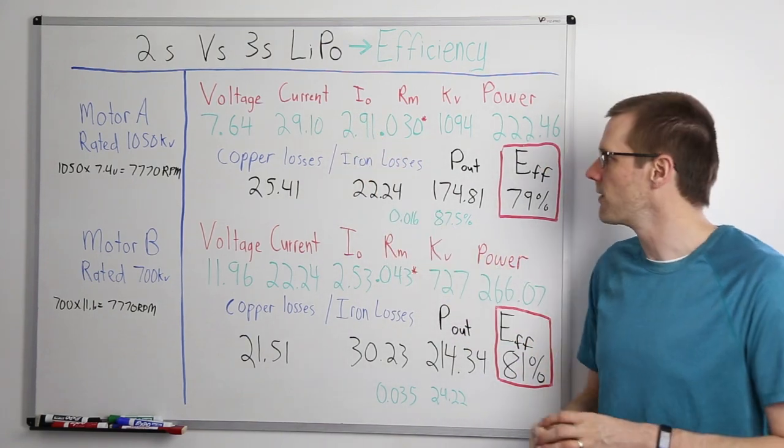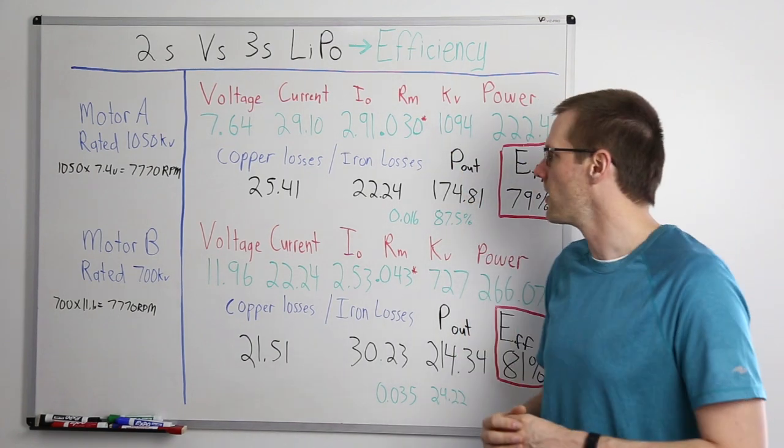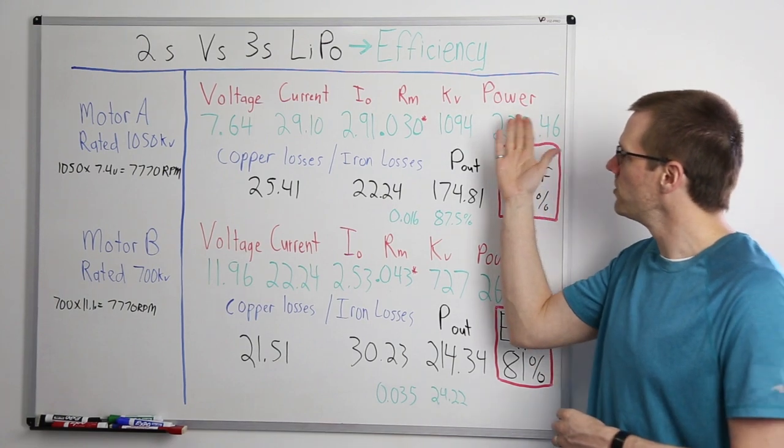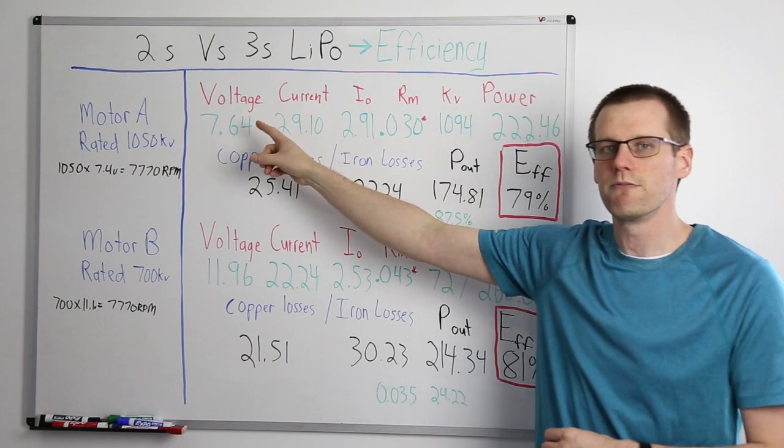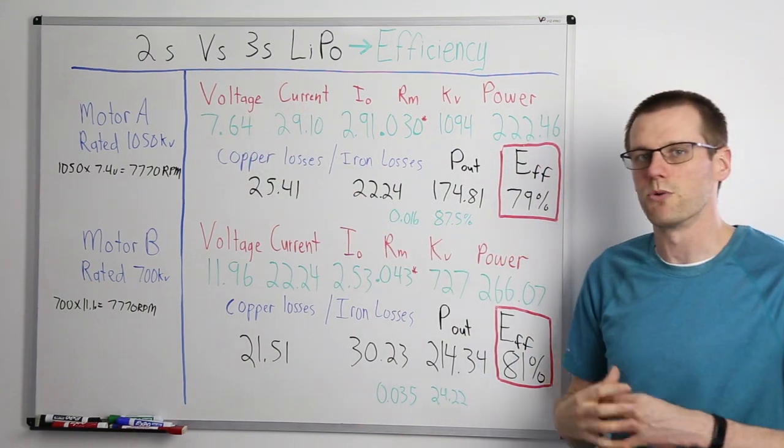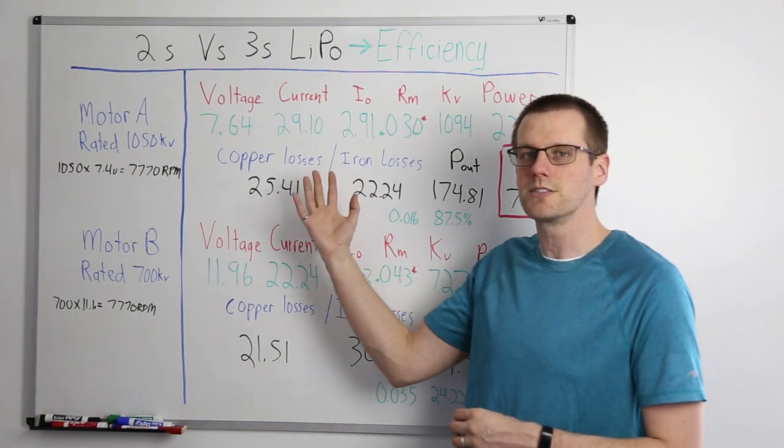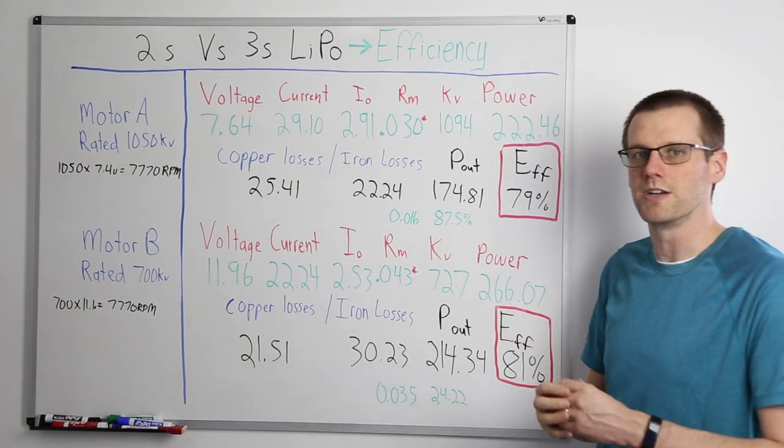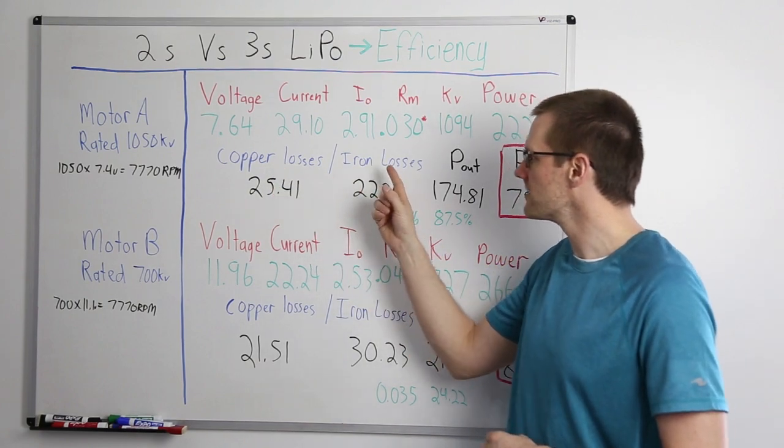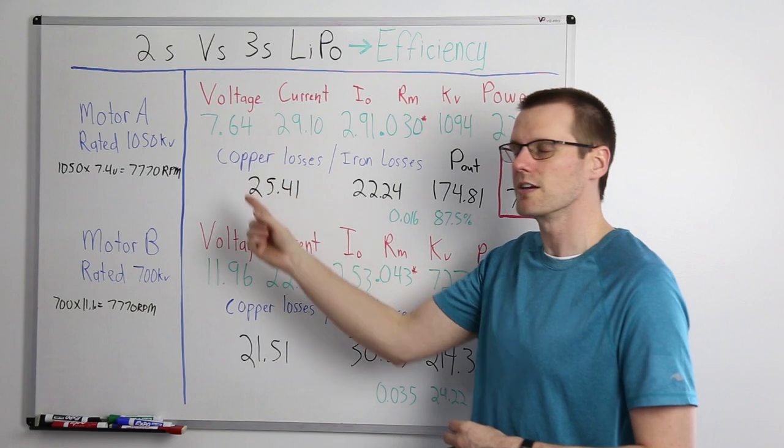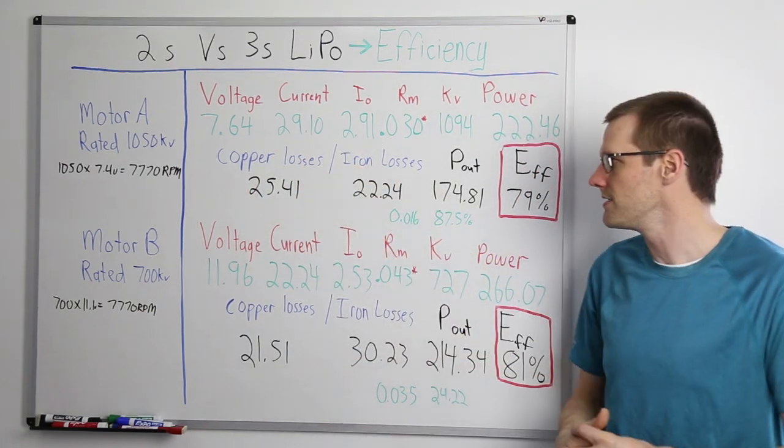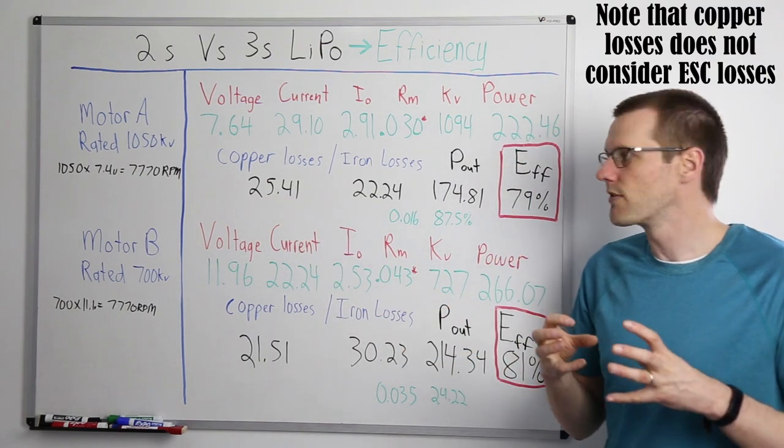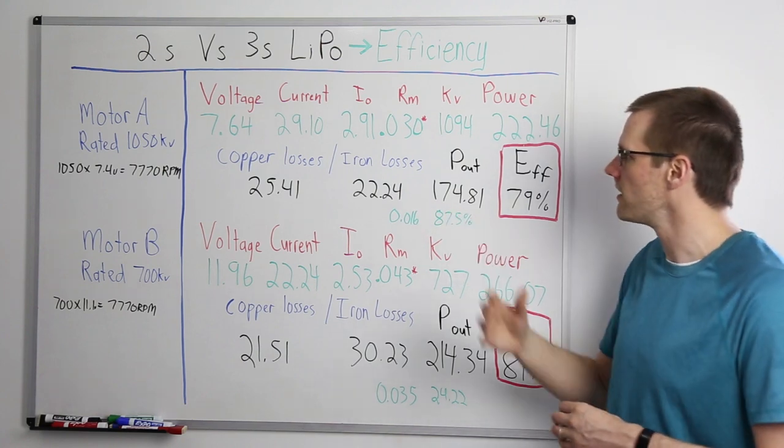So we had a voltage of 7.64 with a current of 29.1 amps, and we had the IO value of 2.91 amps with an internal motor winding resistance of 30 milli-ohm. Our kV actually worked out to 10.94 relative to the 10.50 that the label says that that motor is, and if you go and compute the power output or power input to the motor, this is going to come from voltage multiplied by current, and we get to 222.46 watts. Now, the next thing that we have to do is compute the amount of losses that we get within our system. This way, we can actually get the mechanical output that we expect rather than just the power input that we're feeding to the motor. The way that we do this is we calculate our copper losses as well as our iron losses. Now, if you don't know exactly how to get to this step, I do have a video that explains these two things in some significant detail that we've done quite some time ago. So just search for that, and it will come up. We get 25.41 watts of copper losses for motor A and 22.24 watts of iron losses for motor A.